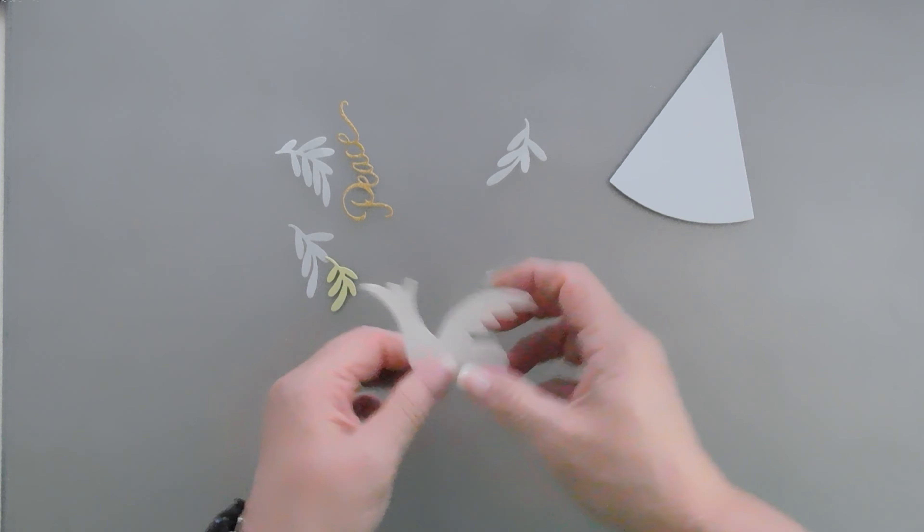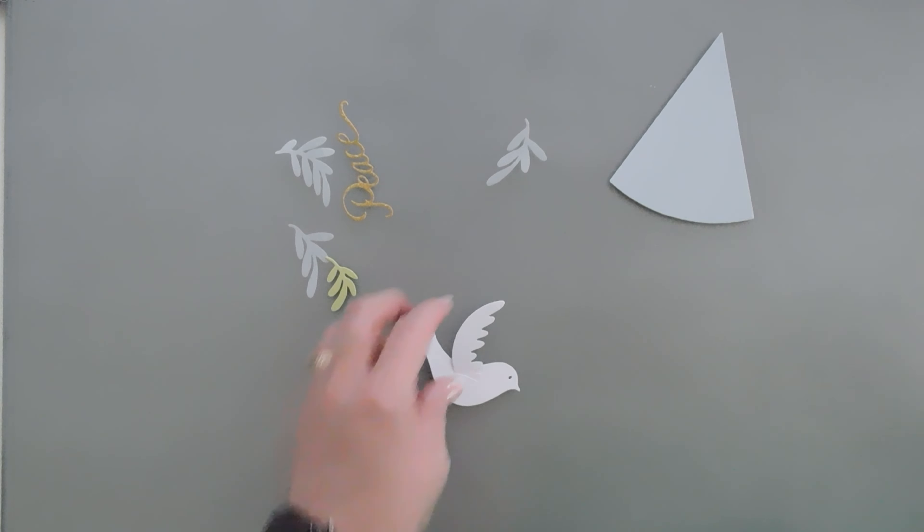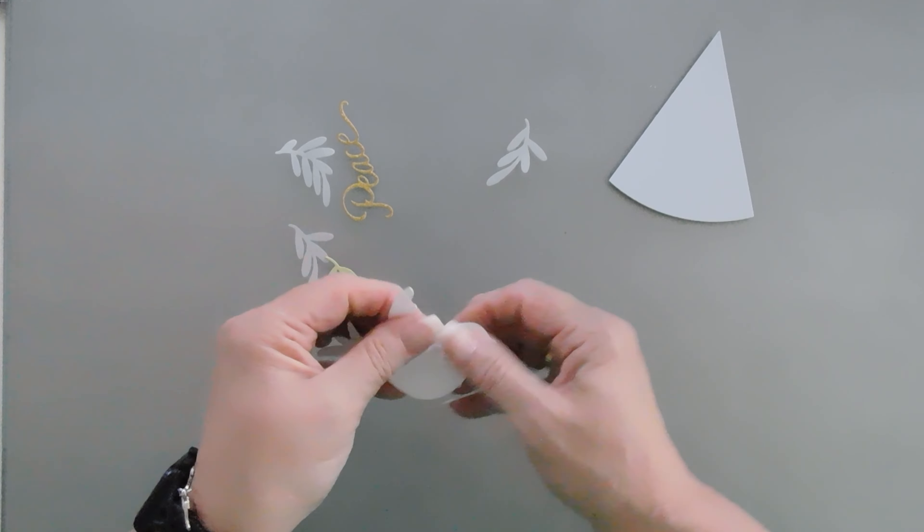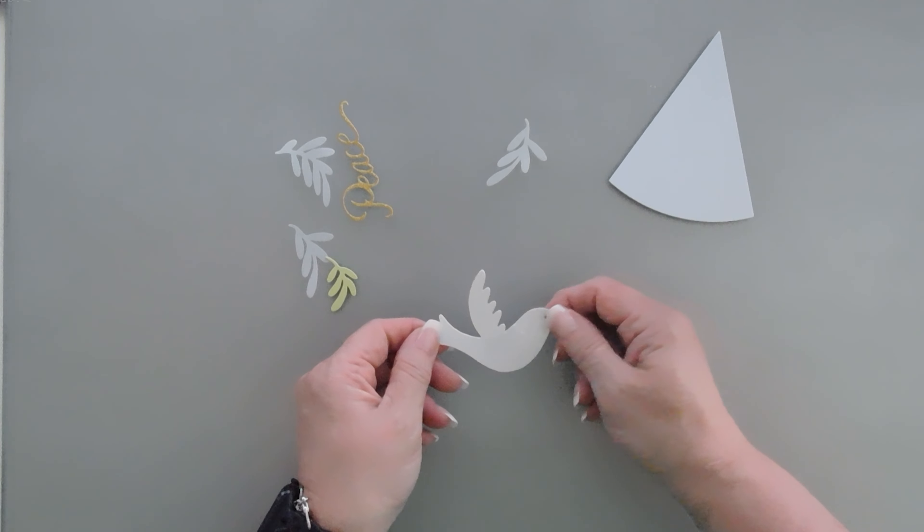And we'll die cut out our piece. There is another greeting in here that says to you and yours, that's on the line. Really nice, but we're not going to use that for the card today. Now this is our larger dove, and then there's also three more doves in here. I'm going to die cut this out with white cardstock.